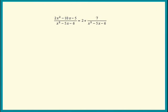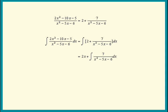The given integral now equals the integral of 2 plus 7 over x squared minus 5x minus 6. Integrate the 2, we get 2x.